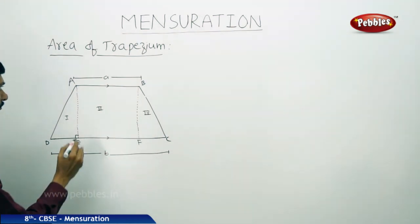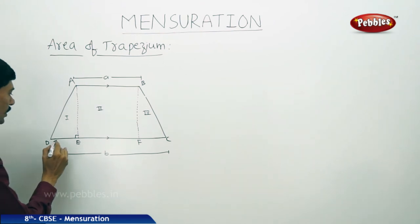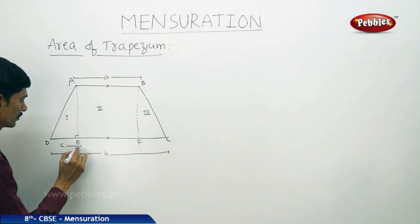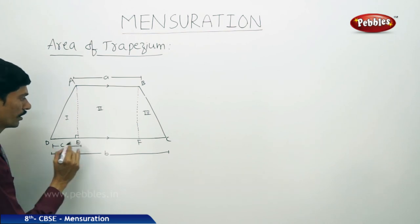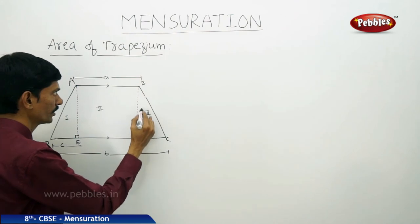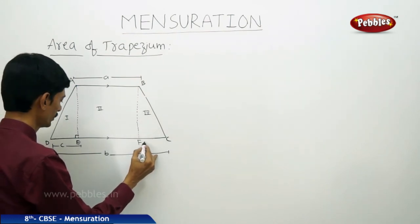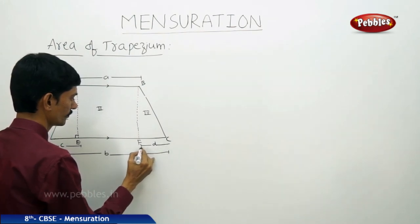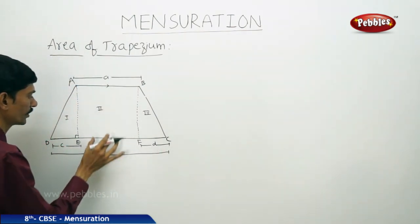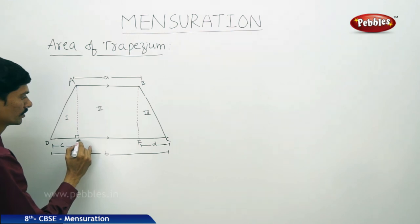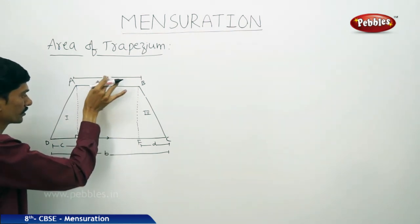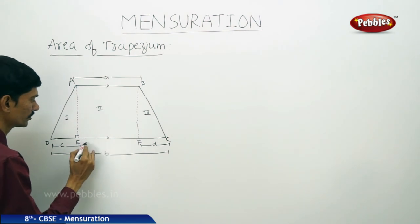In the first part, let the base of the triangle DE be C units, and in the third part, let the base of the right triangle be D units. In the second part, EF is the same as AB, so EF is also A units.